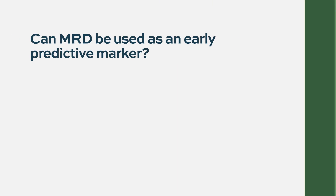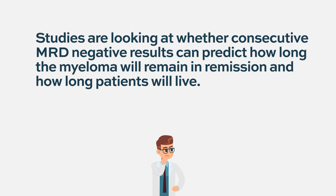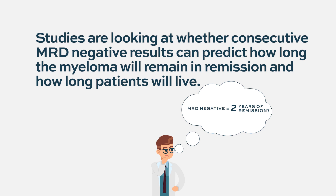We look at progression-free survival — how long a therapy prevents the myeloma from getting worse — as a predictive marker for how long someone's going to live. Our therapies are now so effective that progression-free survival is very long, so we're looking at earlier markers to help therapy development. One such marker is MRD: if more patients on a certain treatment go MRD-negative — meaning myeloma can't be detected even by the most sensitive measures — that will predict improvement in remission duration and subsequently how long patients will live.